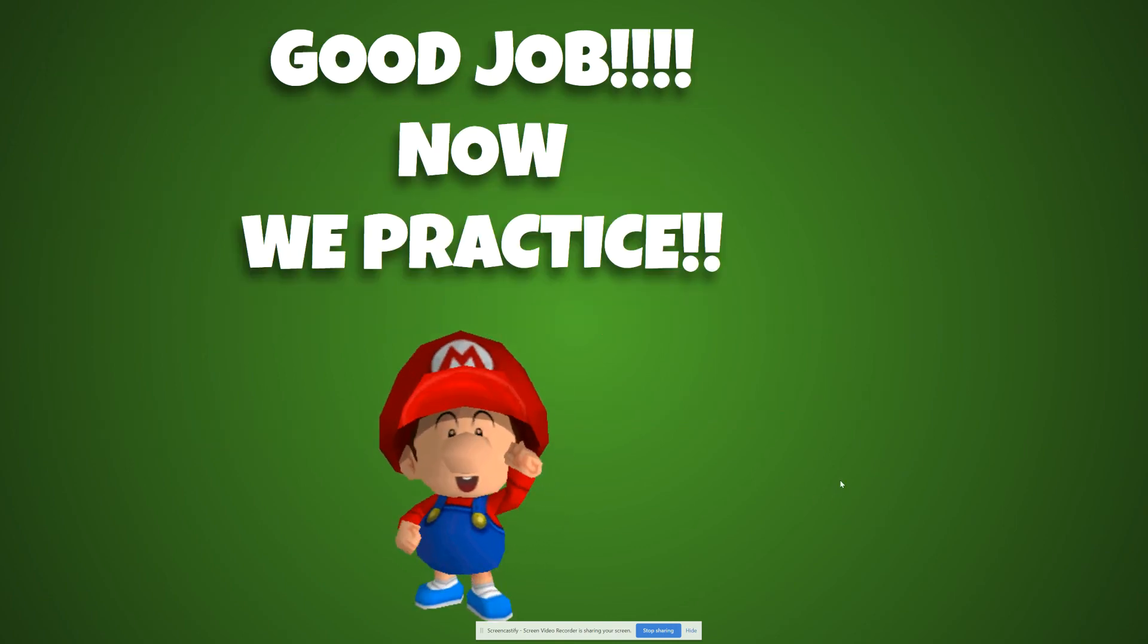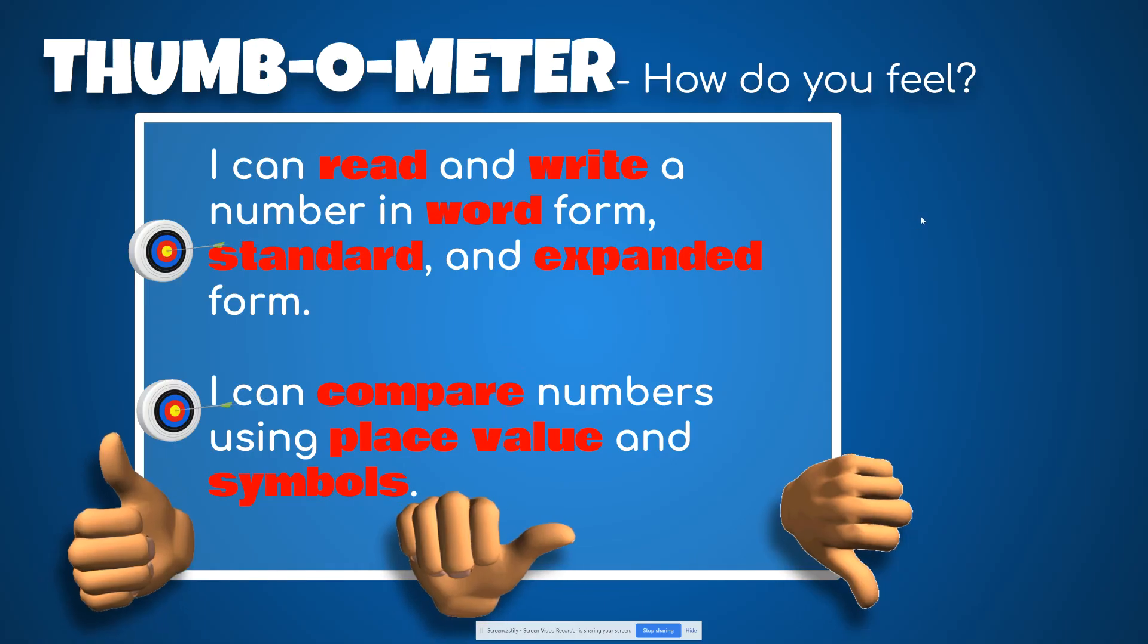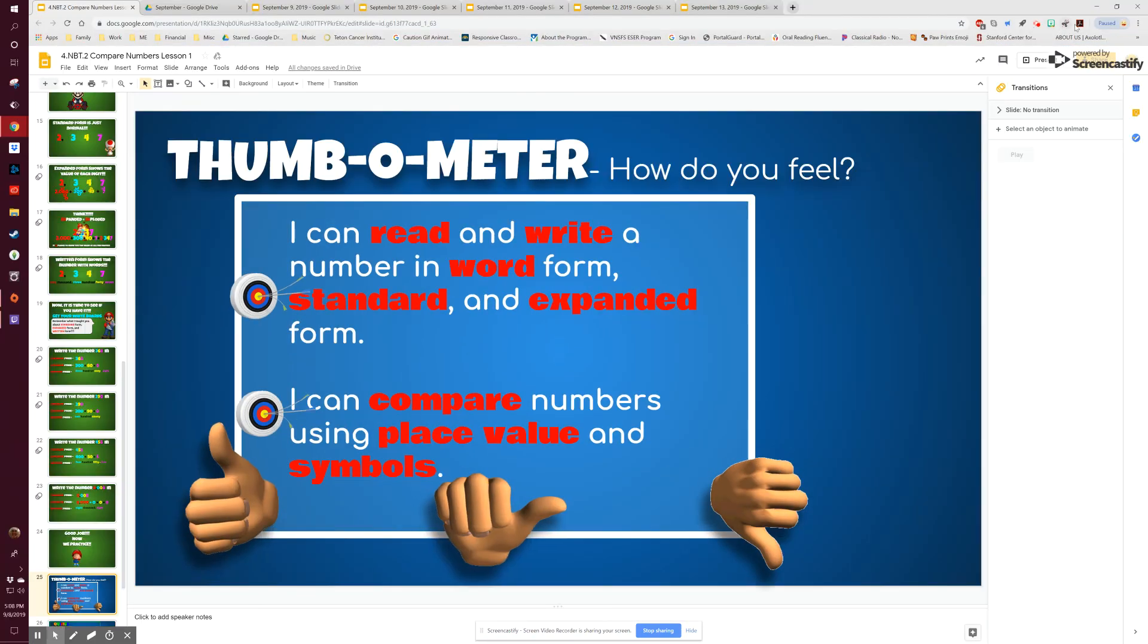Now written form is 8,008 in words. Good job. Now good job. Now we practice. Mario is absolutely ecstatic. You are awesome. Awesome. Beautiful job. Thank you. Thank you. Thank you.